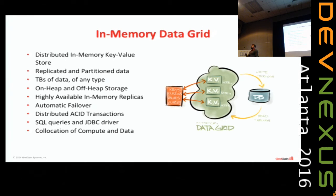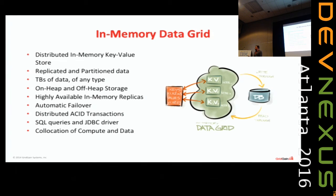Our approach gives you a full spectrum: from high-speed non-transactional behavior all the way to proper two-phase commit transactional behavior. This is not true in eventually consistent systems — you can get all the speed, but you can never get to fully transactional behavior. That's why we're used heavily by banks — they build applications that move money, and you get exactly the same transactional guarantees as you would from an Oracle database.